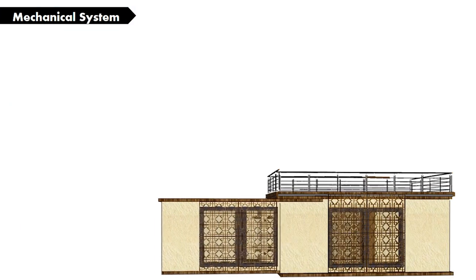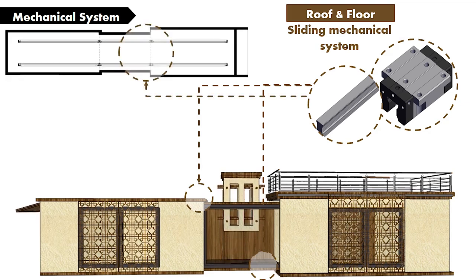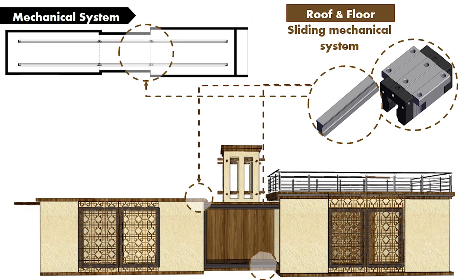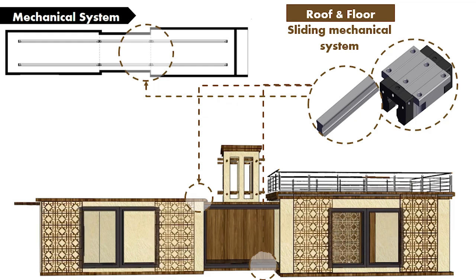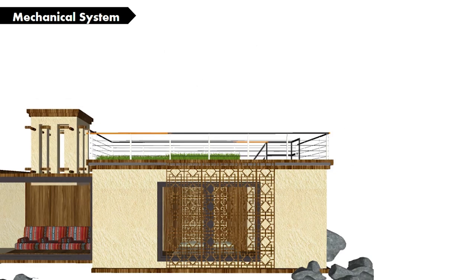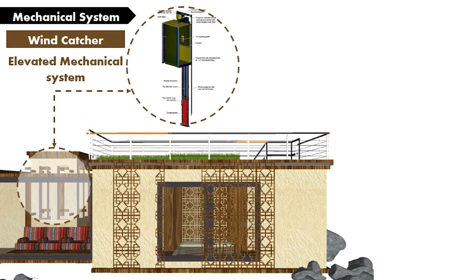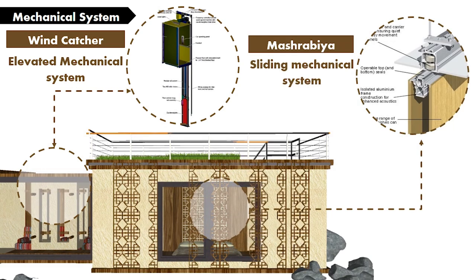For the mechanical system, the container blocks are moved using runner-block slides on guide rails. The shading device is moved forward and backward depending on the season and amount of light preferred in bedrooms, using a folding arm. The Burjeel's up-and-down movement is based on an elevated mechanical system similar to an elevator — a wire rope pulls the Burjeel up and down with the help of a sheave system. The Mashrabia sliding mechanism uses a Strakan carrier system to ensure quiet and easy movement of panels.